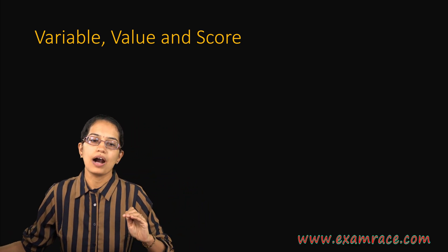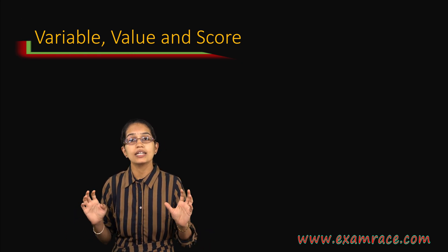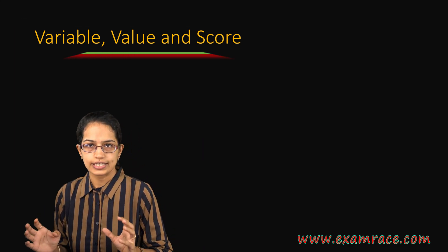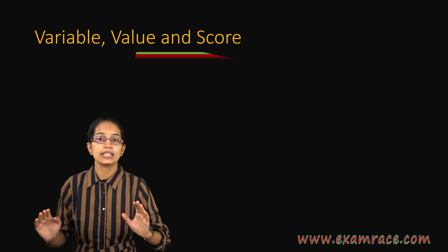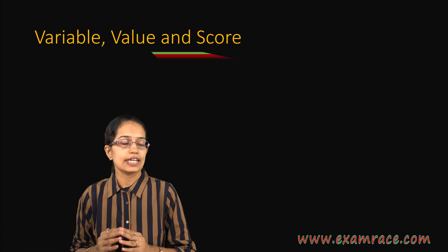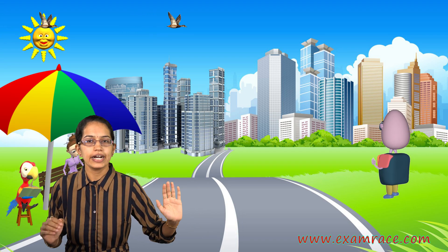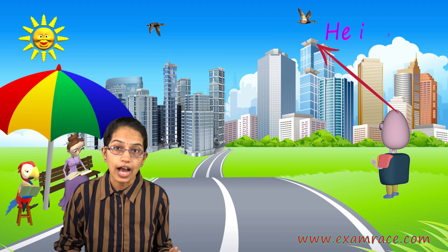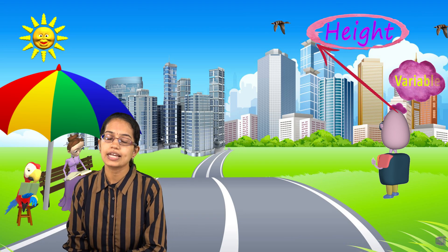Let's now talk about variable, value and score. These are integral parts of your statistical understanding. A variable is anything that varies. Let's take an example of a city — you have numerous buildings there. When I understand these buildings on the basis of height, I can say height is one of the variables.